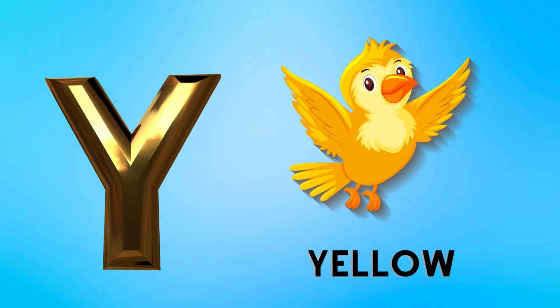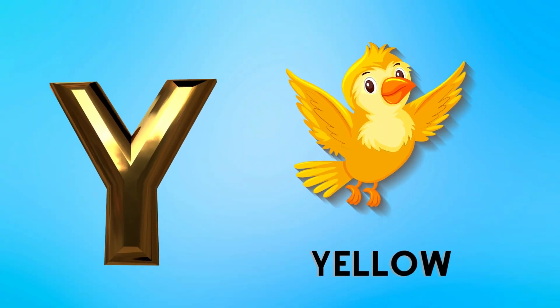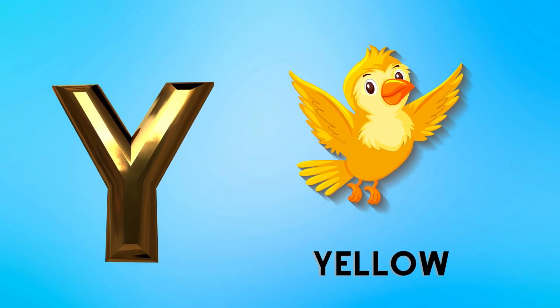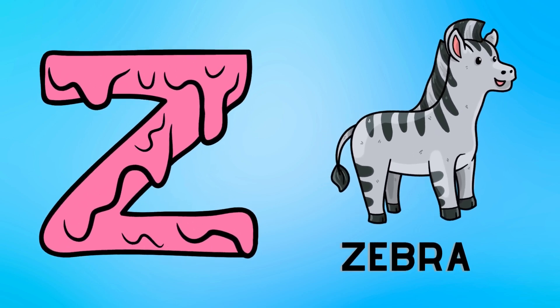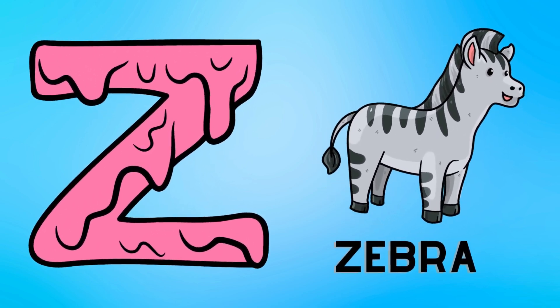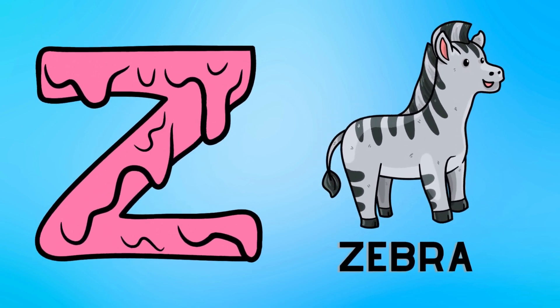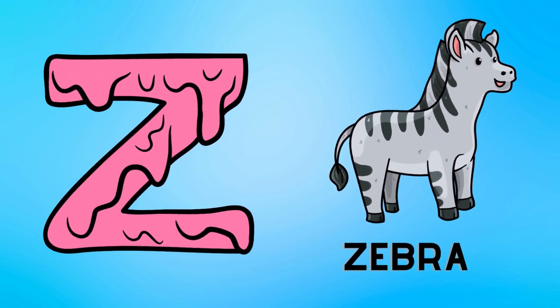Y is for yellow, ye-ye-yellow. Z is for zebra, z-z-zebra.